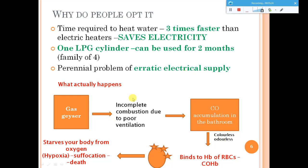When gas burns properly it produces carbon dioxide, but incomplete combustion due to poor ventilation leads to the formation of carbon monoxide. This carbon monoxide accumulates within the bathroom. Since it is colorless and odorless, people won't even know that carbon monoxide is accumulating within this closed enclosure. This CO binds to hemoglobin and forms carboxyhemoglobin.